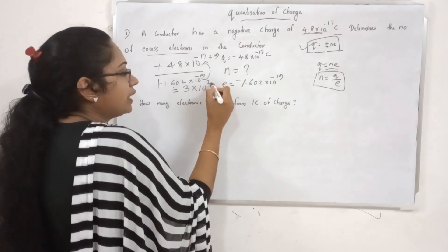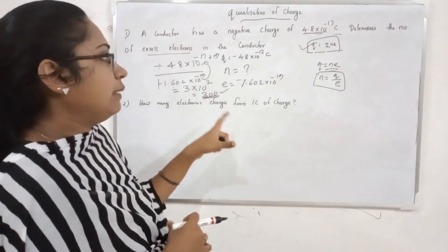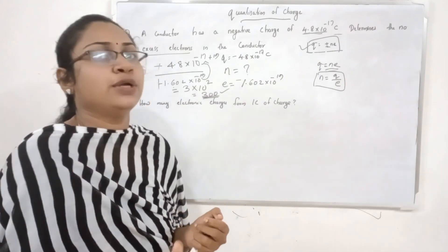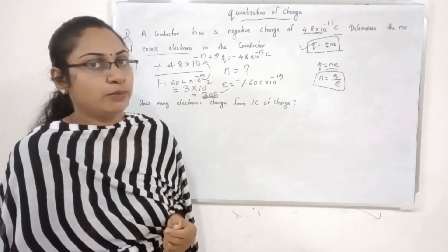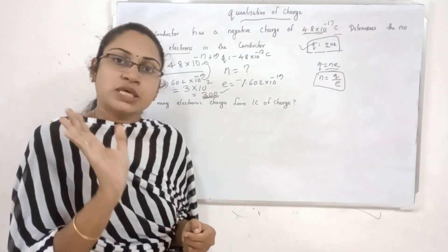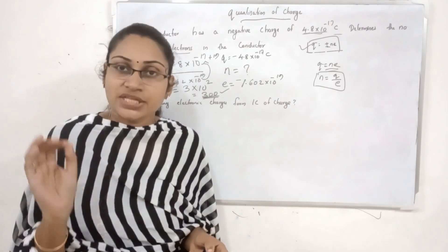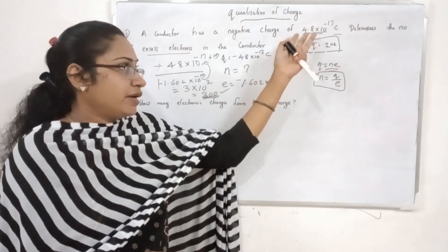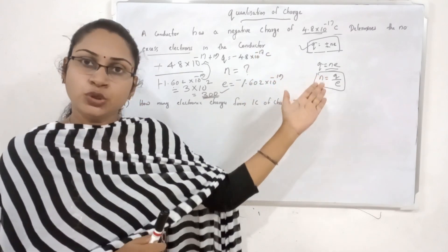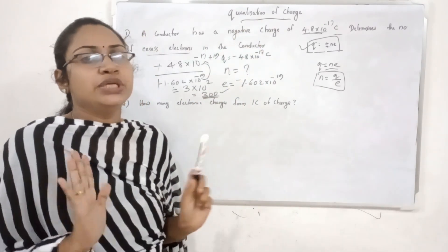That gives us 300 — that is the answer. We have a conductor with a negative charge of 4.8 × 10⁻¹⁷. There are 300 excess electrons in this conductor. The quantization equation Q = n·e is used to find the number of electrons. The answer has no unit.